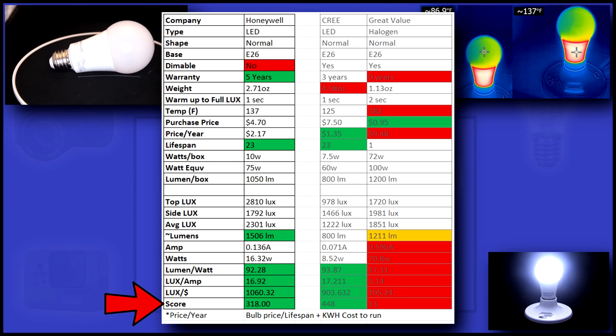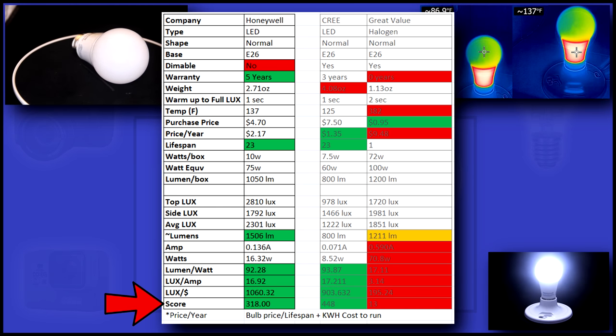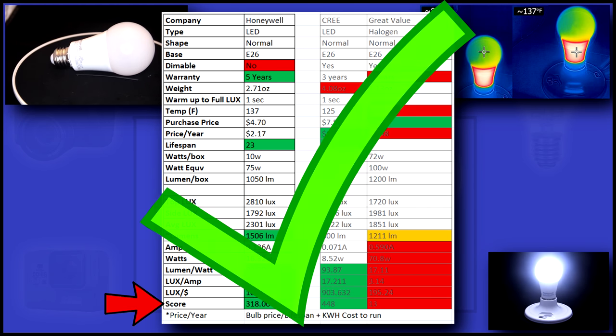In the end, I give each bulb a score. This score is calculated by using all the variables above, including price per year, lumen per watt, warranty, lifespan, and more. The Honeywell 10 watt LED scored a 318, which put it in the top 20% of all the bulbs I've tested.